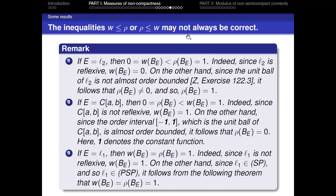On the other hand, if we consider C[a,b], then ρ(B_E) = 0, which is strictly less than ω(B_E) = 1. Indeed, since C[a,b] is not reflexive, ω(B_E) = 1. On the other hand, the order interval [−1, 1] — which is the unit ball of C[a,b] — is almost order bounded, so ρ(B_E) = 0.